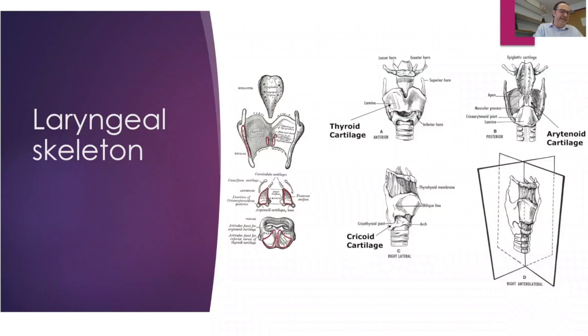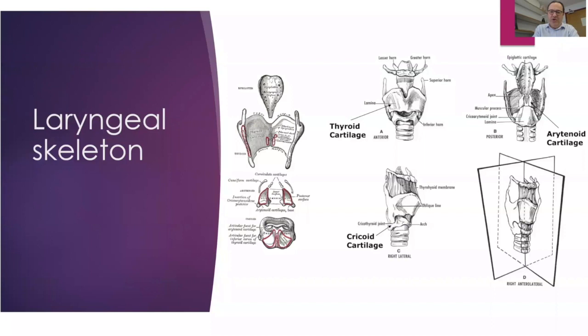The laryngeal skeleton: the larynx is formed of the hyoid bone, which is the only bone in the larynx. It has lesser and greater horns and is a floating bone — not articulated with any other bone, but suspended by muscles of the floor of mouth, strap muscles, and multiple membranes and ligaments. Cartilages include the epiglottis and the thyroid cartilage, which has two laminae and superior and inferior horns. The inferior horn articulates with the cricoid through the cricothyroid joint. The cricoid itself is the only complete ring of cartilage in the airway.